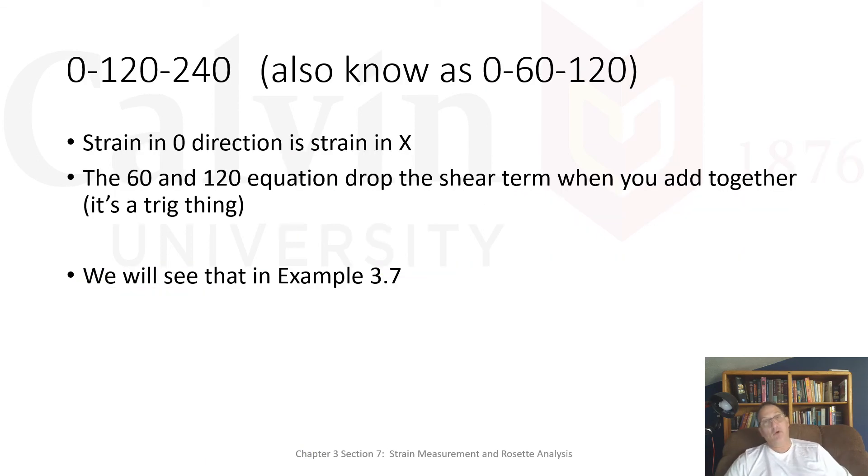The 0, 120, 240, or the 0, 60, 120, the strain in the 0 direction is strain in the x. So that saves us one equation. And then when we get the 60 and the 120 equations, if you do them both and add them together, the shear term drops out. And so you've already solved for x, and now when you sum them together, they drop out, and so you're all set. And we'll show that in example 7. You'll see how that plays out. And that makes those a little easier to solve. Again, some of this is experience. The reality is, if you're going to do this on a regular basis, you're going to program it into your calculator that you put in the data, and it spits out the stresses, or sorry, it prints out the strains. And then it might spit out the stresses in those directions. And then it might do a stress transformation and give you the principal stresses.